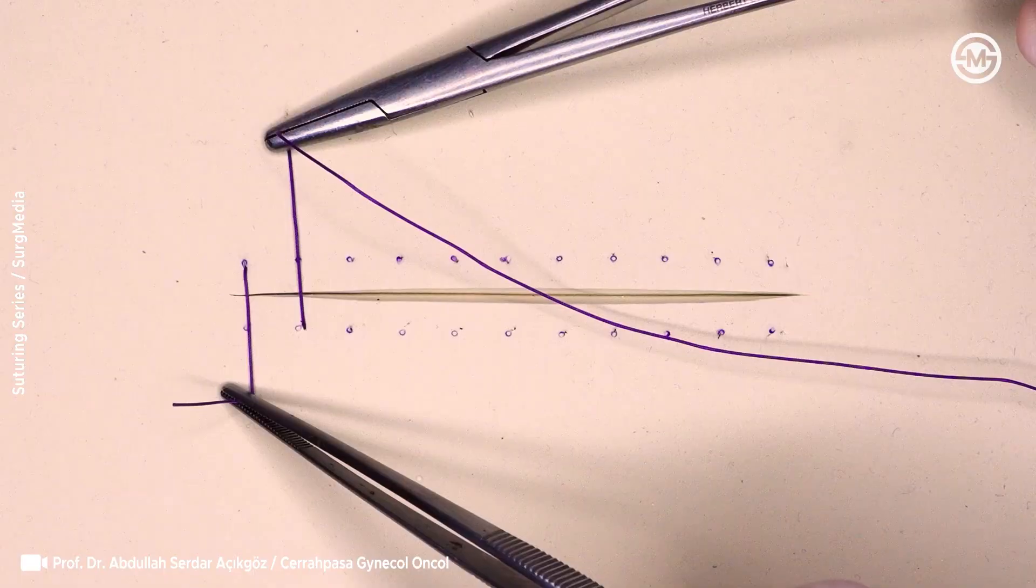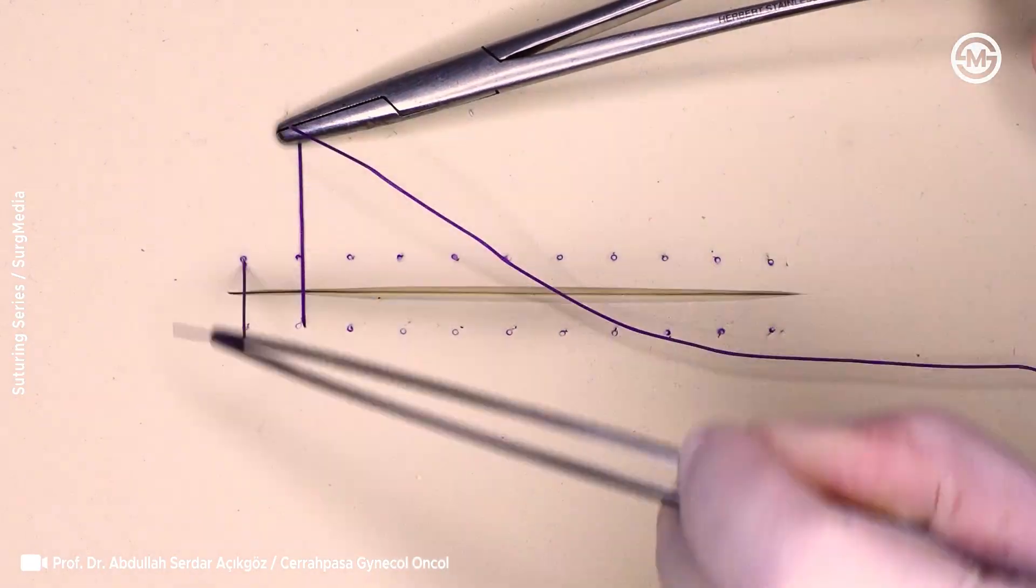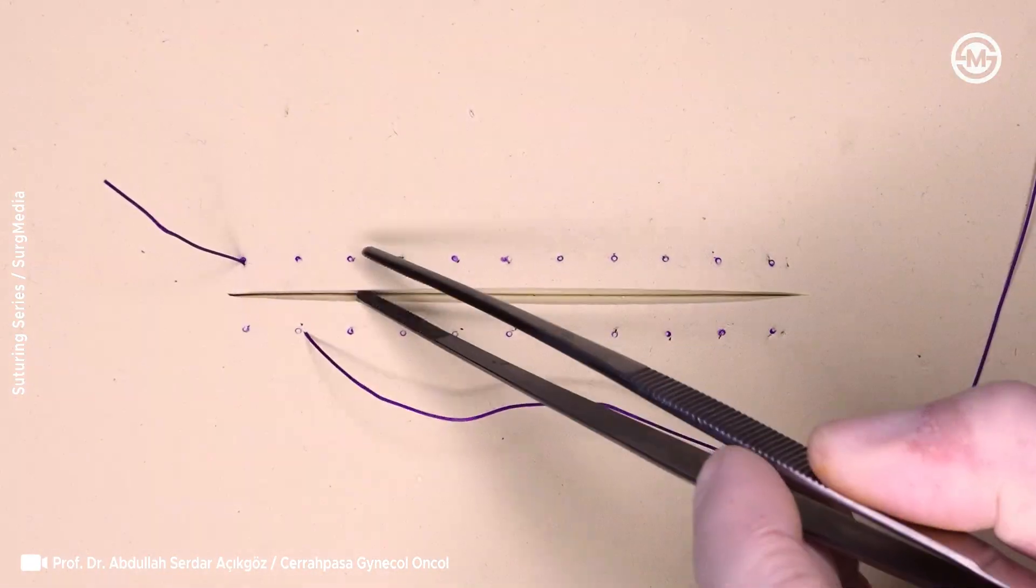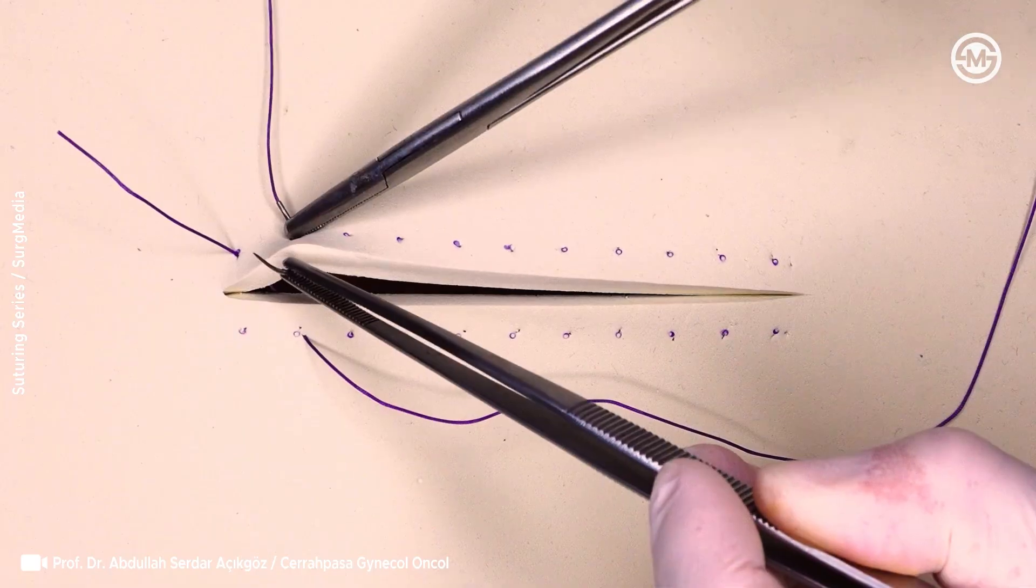When you look at it from the outside, you'll see two parallel suture lines, but underneath, inside the tissue, it creates a familiar crossed pattern.